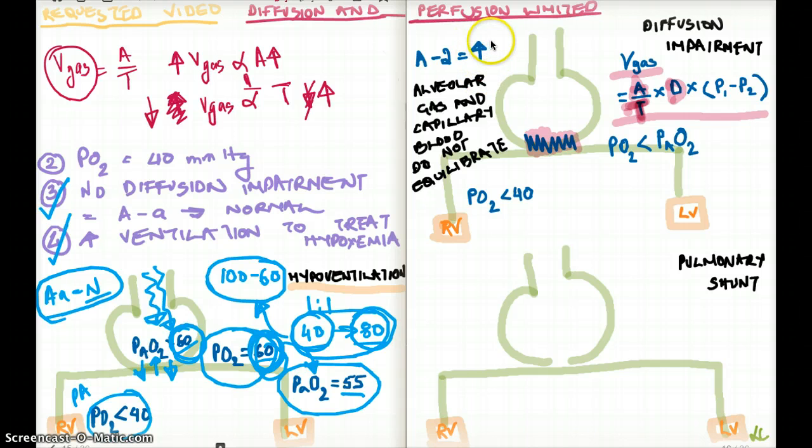So now it's obvious to us that in diffusion impairment, the AA gradient will not be normal, because there is quite a difference between the alveolus and the capillary. The AA gradient is not going to be normal because the alveolar gas in the capillary blood do not equilibrate. They don't get the chance to equilibrate like a normal lung.